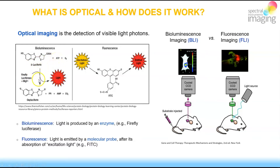The generation of light by fluorescence happens by a very different mechanism. Fluorescent light is essentially the process of molecular electron excitation and relaxation, where excitation is caused by an external light source and relaxation results in emitted light.